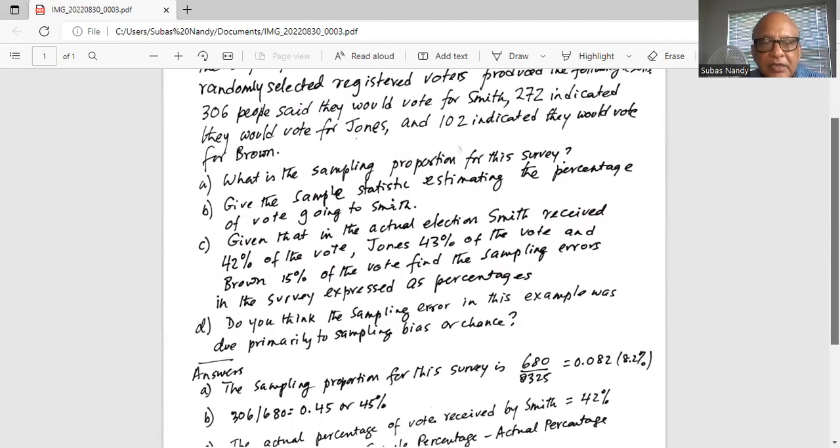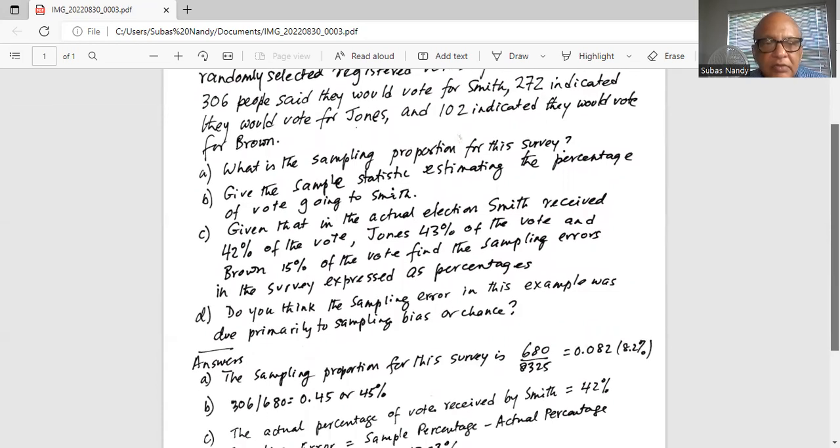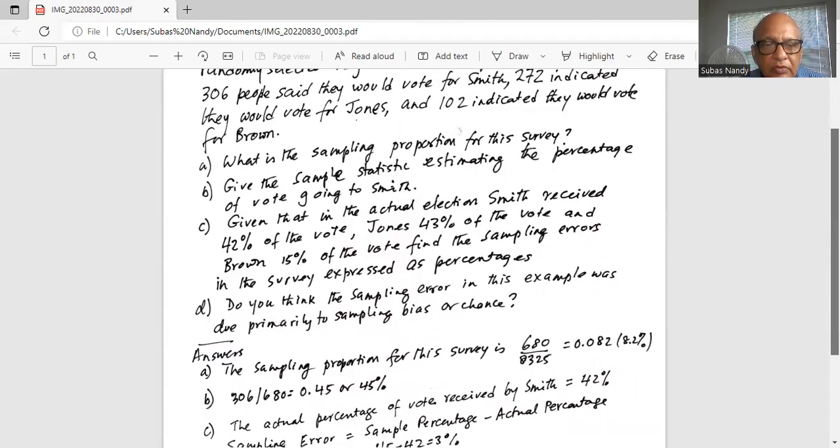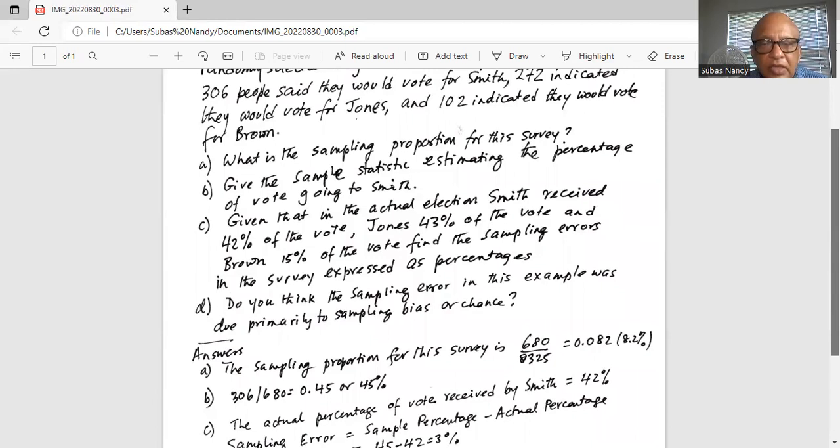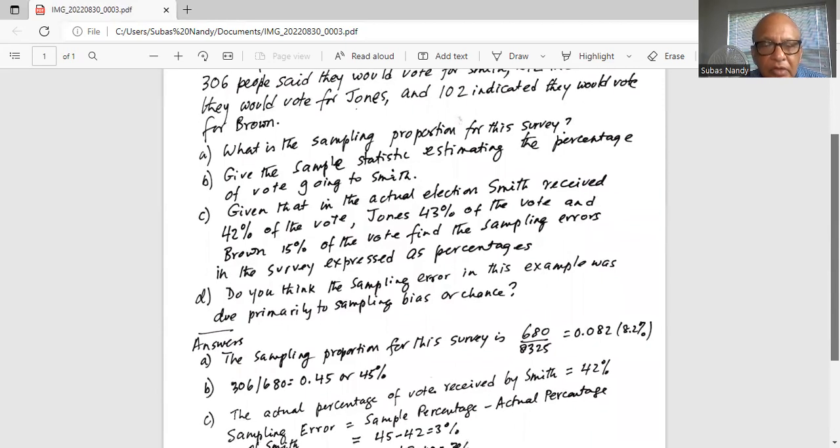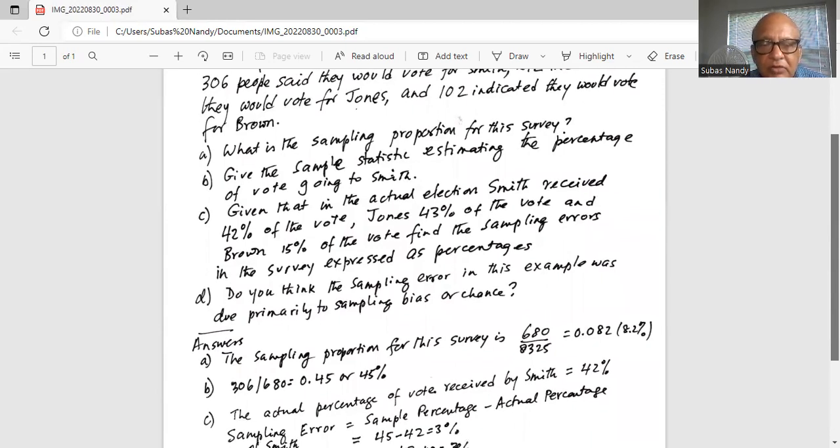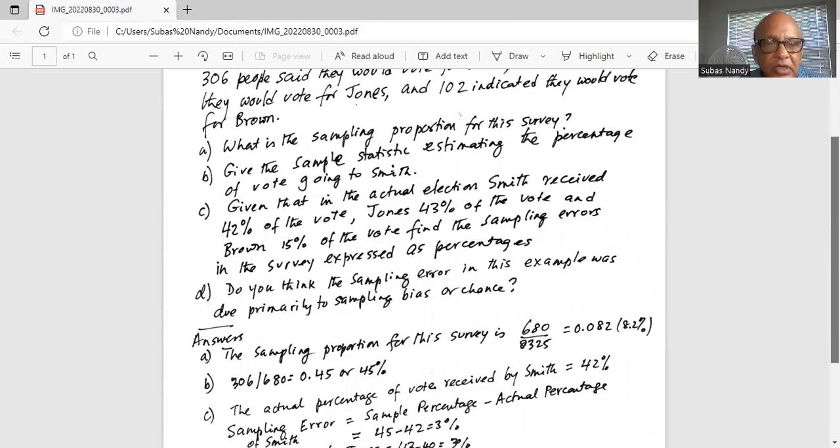Part C: given the actual election, Smith received 42 percent of the vote, Jones 43 percent of the vote, and Brown 15 percent of the vote. Find the sampling error. So the actual percentage of vote received by Smith is 42 percent.